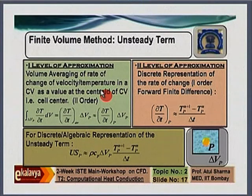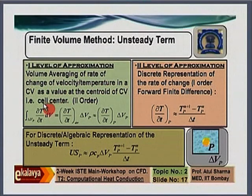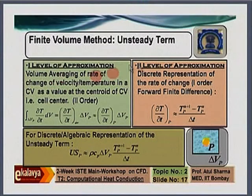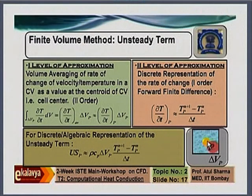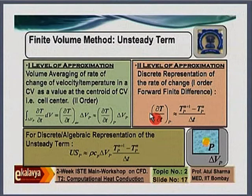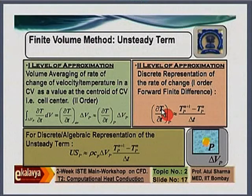So the average value of the rate of change of temperature in a control volume is expressed as the value at the centroid of the control volume. This is the first level of approximation — volume averaging of the rate of change of temperature. The second level of approximation is how to express the differential term ∂T/∂t at the centroid point in discrete algebraic form.